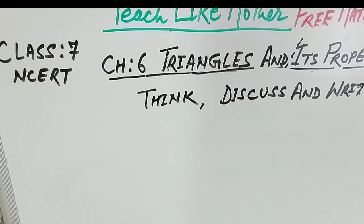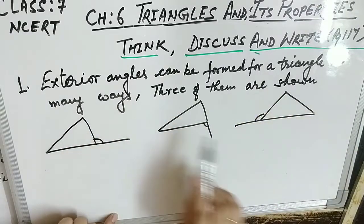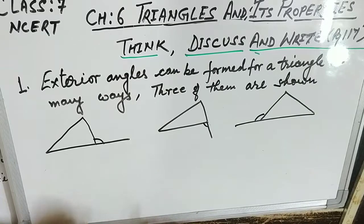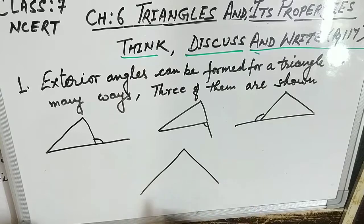We are going to discuss the problems given at page number 117 of your NCERT book, in the section 'Think, Discuss and Write.' Question number one says exterior angles can be formed for a triangle in more ways — three of them are shown and there are three more ways of getting exterior angles. Try to produce those rough sketches. Draw a rough diagram of a triangle.